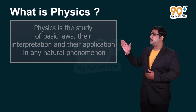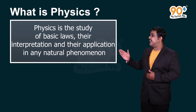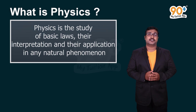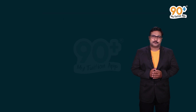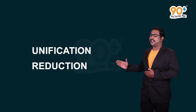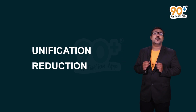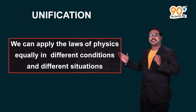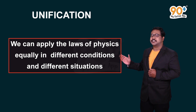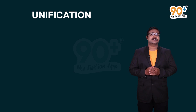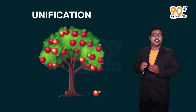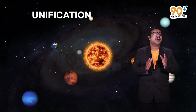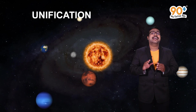Physics is the study of basic laws, their interpretation, and application in any natural phenomena or physical situation. There are two basic thrusts of physics: unification and reduction. Unification means we can apply the laws of physics equally in different conditions and situations. For example, an apple falling from a tree, or the planets revolving around the sun.